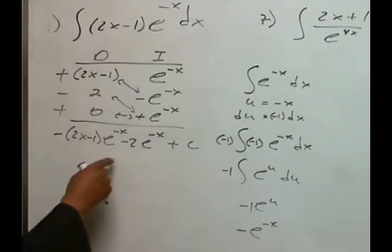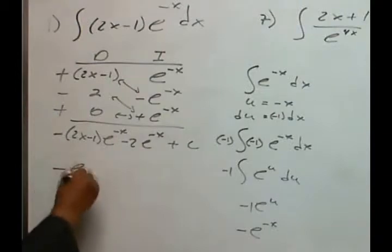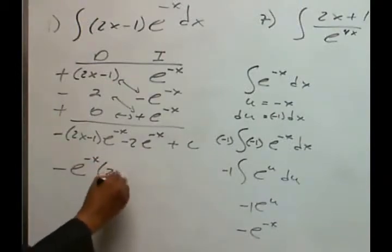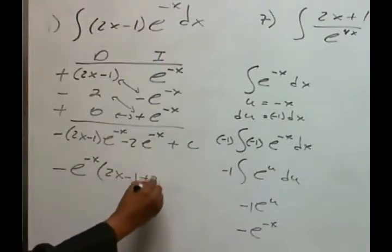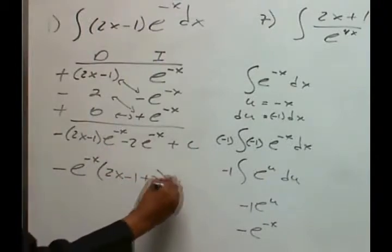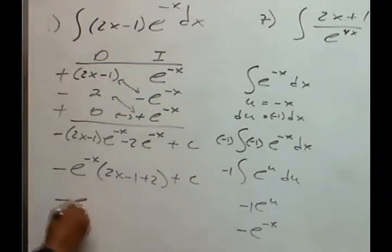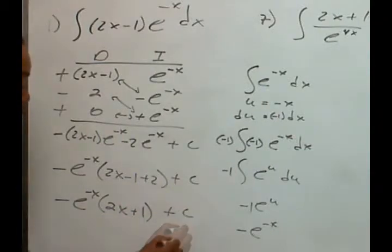And I want to factor out the negative and an e to the negative x. So negative e to the negative x, and that'll leave behind the 2x minus 1 and also a positive 2, plus c. This can be combined, so we get negative e to the negative x times 2x plus 1, all plus c.